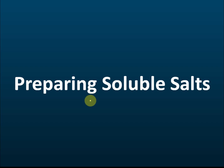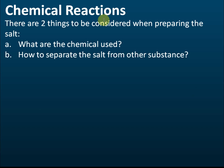Let's start with preparing soluble salts using chemical reactions. When choosing a chemical reaction to prepare a salt, there are two things to consider: first, what chemicals you want to use, and second, how to separate the salt from other substances. After the chemical reactions, the products may contain other substances like water and excess reactants that need to be removed.